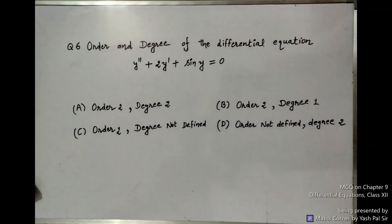Now we have question number 6. Find the order and degree of the differential equation y'' + 2y' + sin(y) = 0. I am repeating the statement: y'' + 2y' + sin(y) = 0. Find the order and degree of the differential equation.